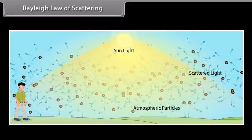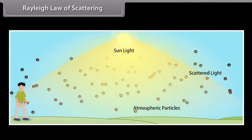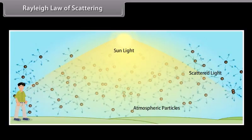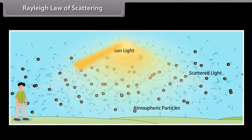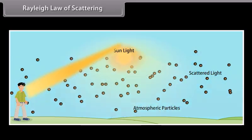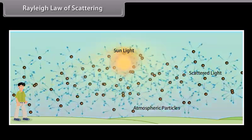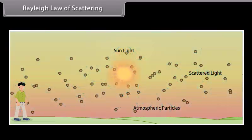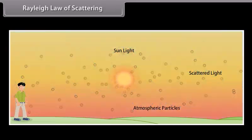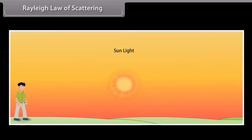Why does the sun appear reddish at sunrise or sunset? As the sun gets lower in the sky, its light passes through more of the atmosphere. Even more of the blue light is scattered, allowing the reds to pass straight through to your eyes.